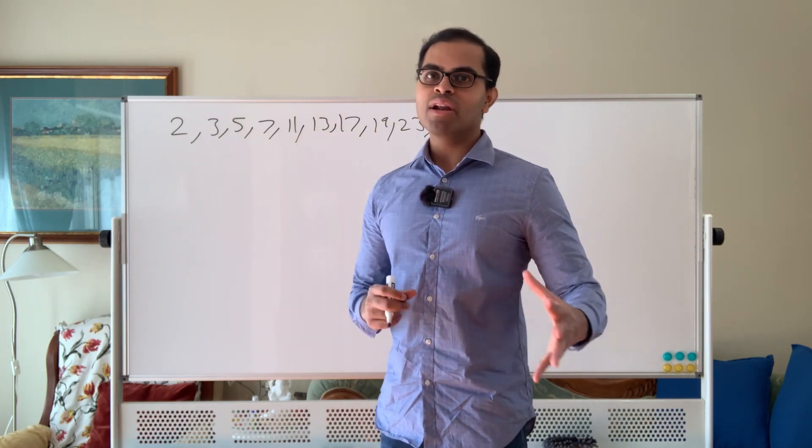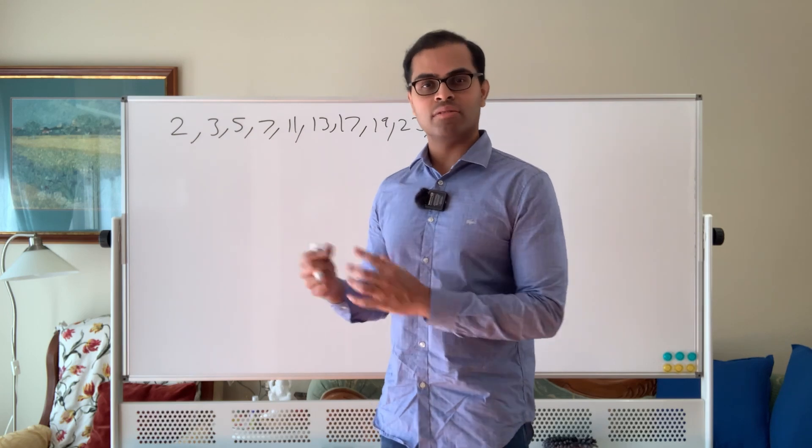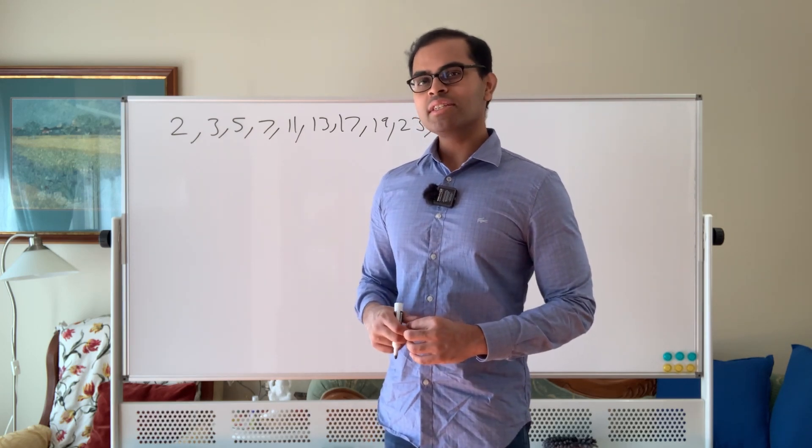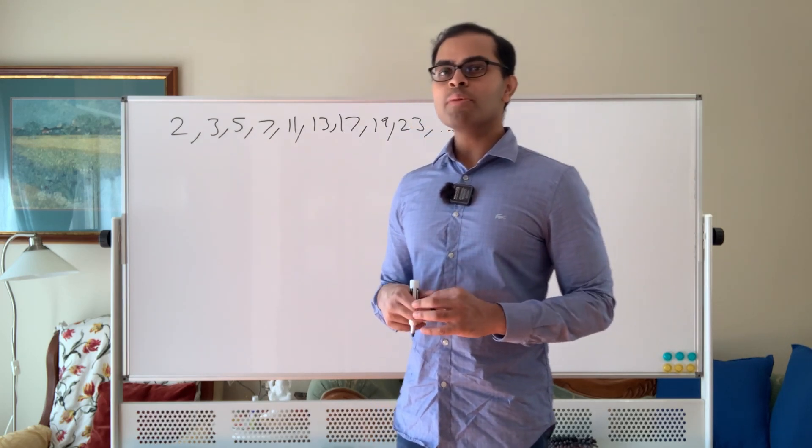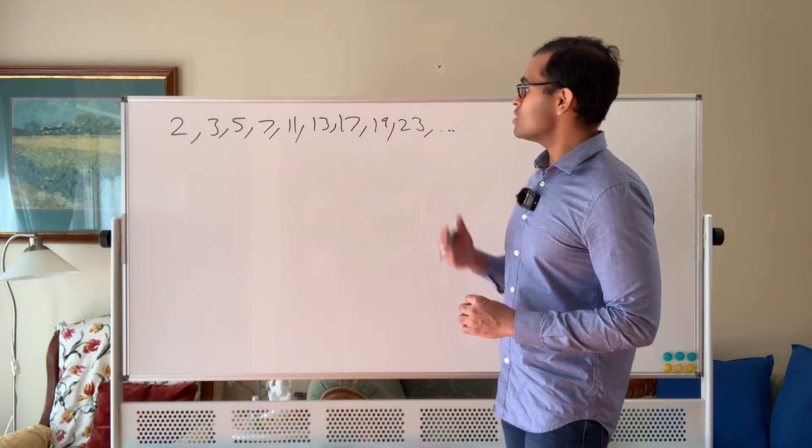There are going to be more numbers below it that could go into it, so a question that's very natural is: do the primes go on forever or do they just stop at some point because beyond a certain point every number is just divisible by something?